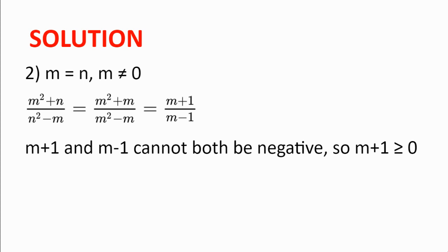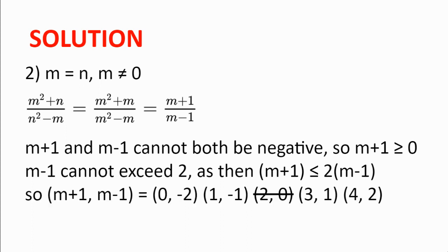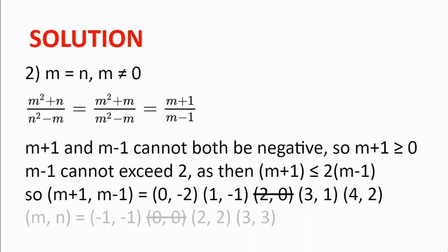So m + 1 ≥ 0. We also notice that m - 1 cannot exceed 2, as then m + 1 and m - 1 will be too close in value for the fraction to be an integer. So valid pairs (m + 1, m - 1) are (0, -2), (1, -1), (3, 1), and (4, 2), giving solutions (m, n) = (-1, -1), (2, 2), and (3, 3) — excluding (0, 0) since the denominator would be zero.